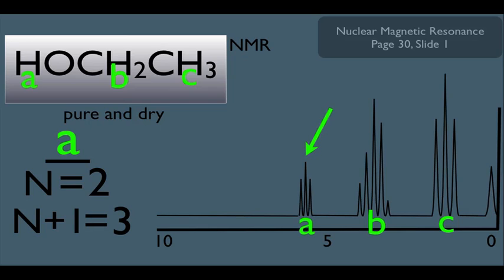Also notice where this peak is occurring, close to the 5 ppm value. We'll see a little bit later that that's typical for OH hydrogens.